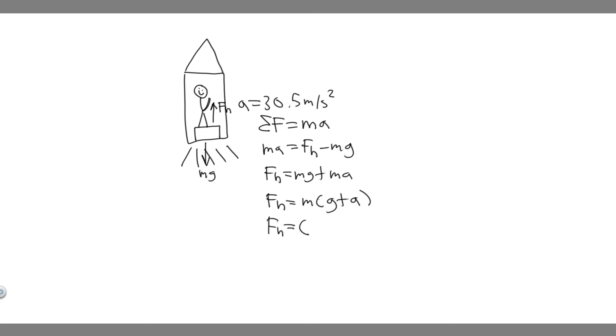And so what we can do now is just go ahead and plug it in. So F sub n, or the apparent weight, is going to be equal to their true mass, which is 92, times g, which is 9.81. That's just a number you should memorize, plus the rate at which they're accelerating, which is 30.5. So go ahead and plug this in: 92 times 9.81 plus 30.5.